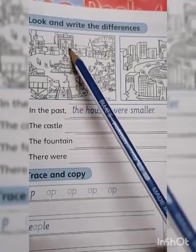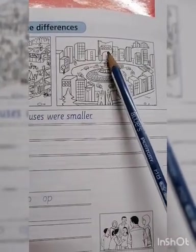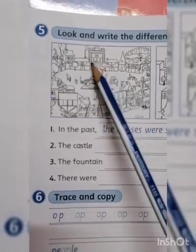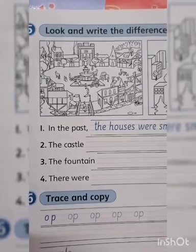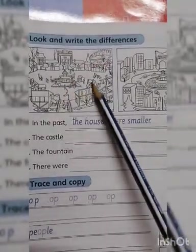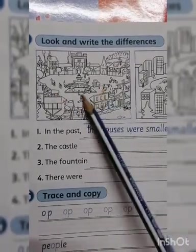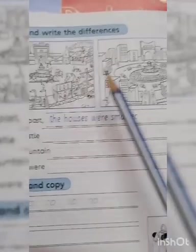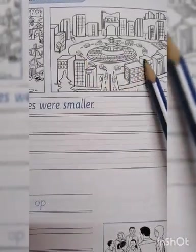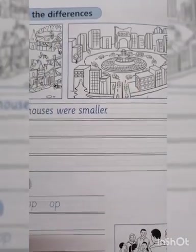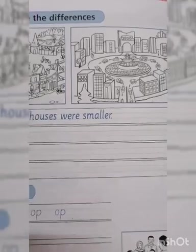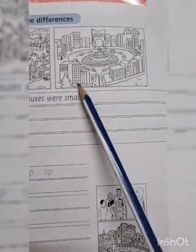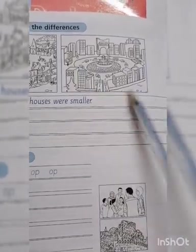Look at this castle now and in the past. Now look at the animals in the street — they used animals to move from one place to another. In the past there were a lot of trees, but now all we can see is buildings.